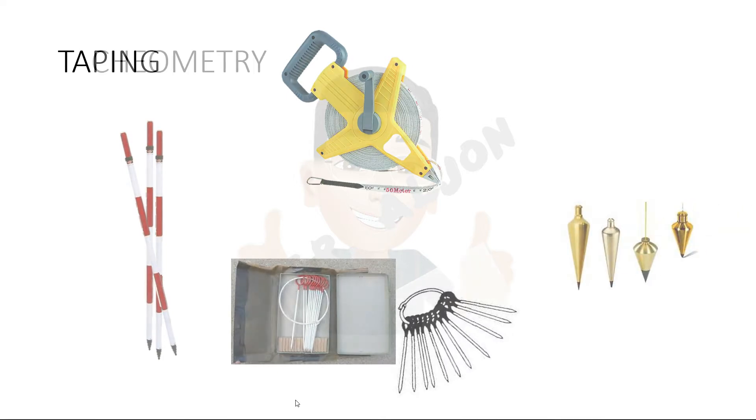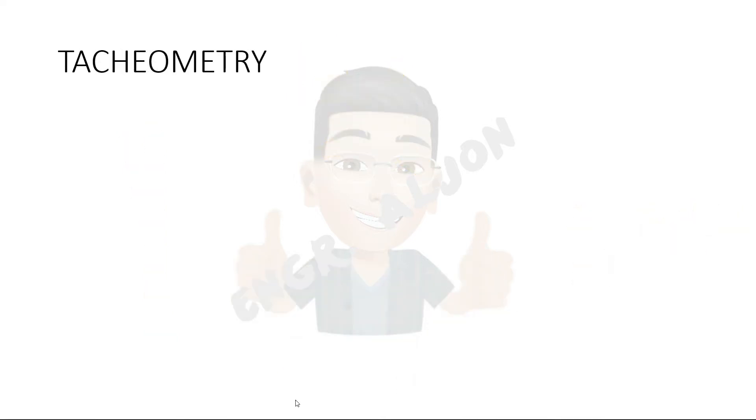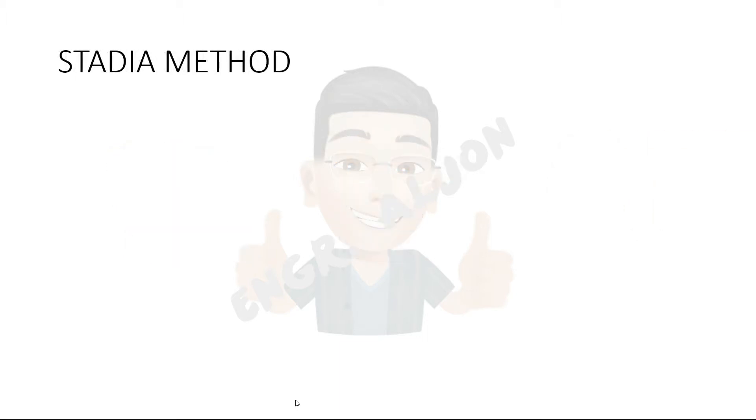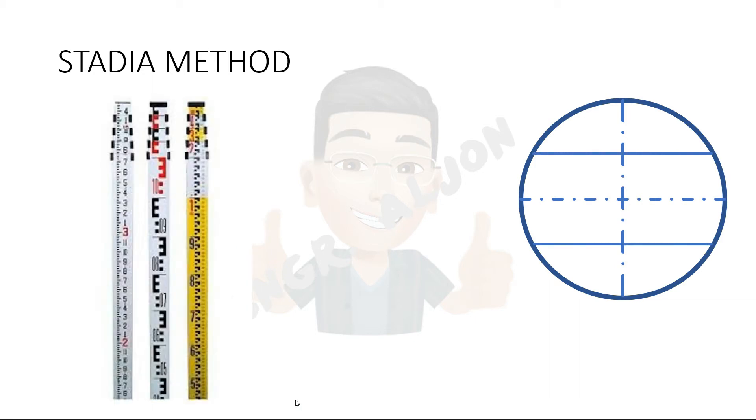Tachyometry is the method that employs optical equipment. Common equipment are automatic level, transit, and theodolite. Under tachyometry, we have the stadia method. This uses an instrument that has a telescope with three horizontal crosshairs and a stadia rod. The three hairs are the upper stadia hair, horizontal crosshair, which is the main crosshair, and the lower stadia hair.